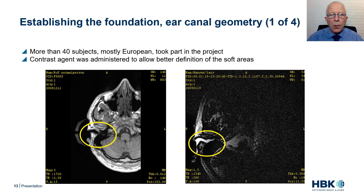Before enrolling a person in the project, the person would have to accept being informed about any signs of illness discovered during the scanning. Each person also had to have their ears cleaned to ensure that any earwax would be removed prior to performing the scanning. They also had to confirm that they had normal hearing and that they would be willing to have their ear canal filled with a contrast agent — in our case, olive oil. The contrast agent was used to allow better definition of the soft areas, as can be seen in the scan. More than 40 people, mostly European, took part in the project.